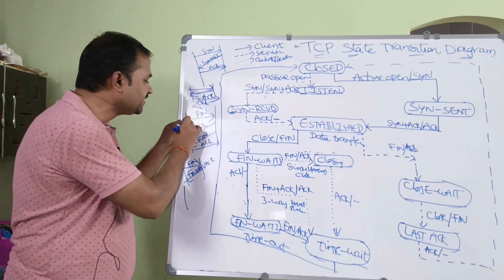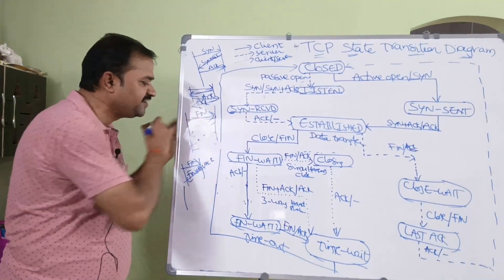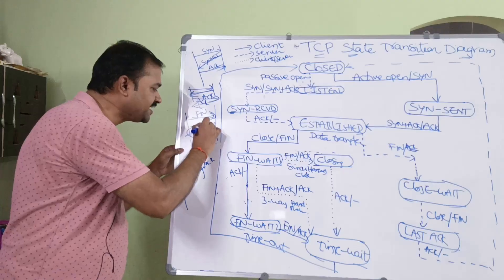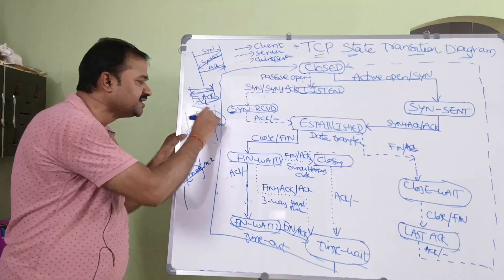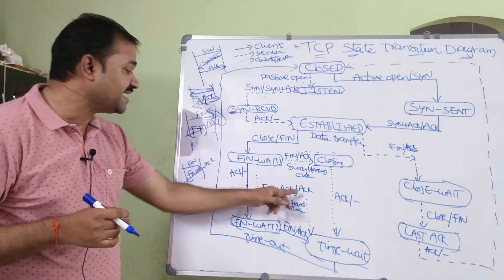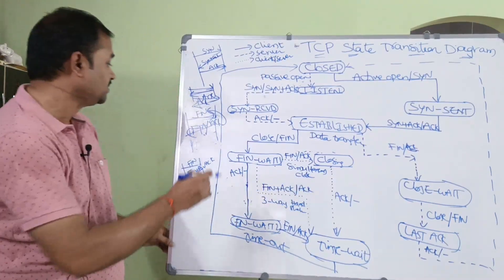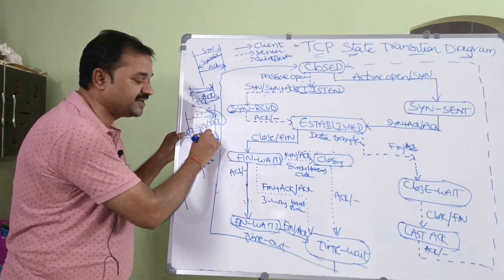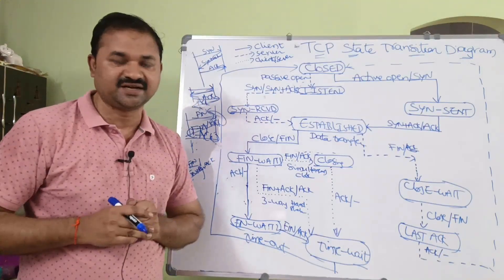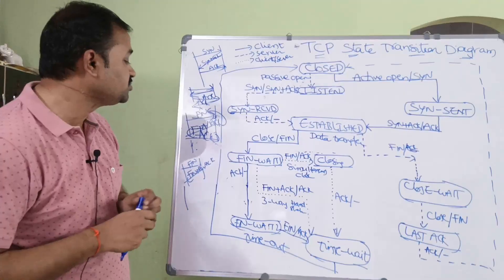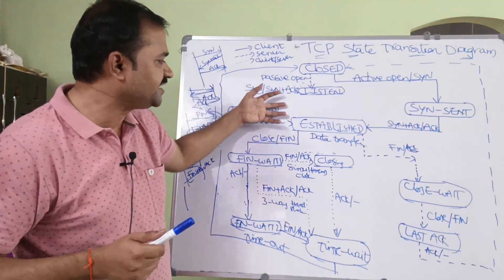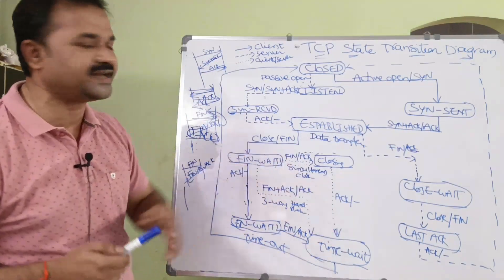The second dotted line scenario: the client transmits a FIN segment and is in FIN-wait-1. The server transmits FIN plus acknowledgement — acknowledgement for the previous FIN as well as its own FIN. The client receives FIN plus acknowledgement and transmits acknowledgement for that FIN segment. This is called a three-way handshake because three segments are transmitted. The client then goes into the time-wait state, and after the timer expires, goes into the closed state. This concludes the TCP state transition diagram, covering connection establishment, data transfer, and connection termination states.